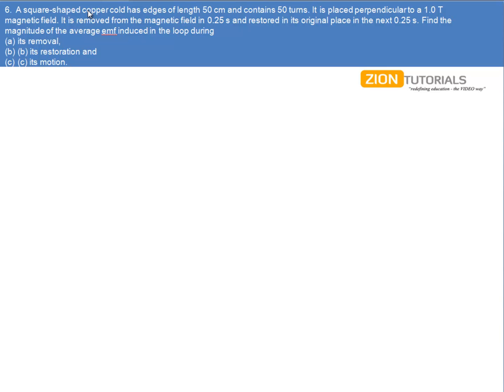Here we have a square shaped copper loop of edge length 50 cm, so A is 50 cm or 0.5 meters. It is having a total turns of 50, so N can be returned as 50.